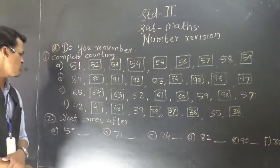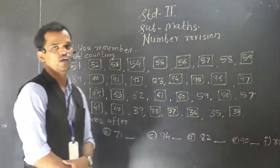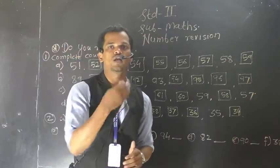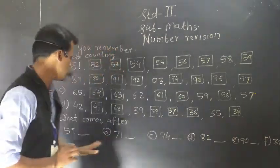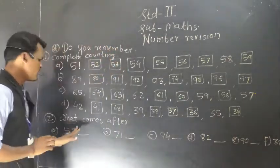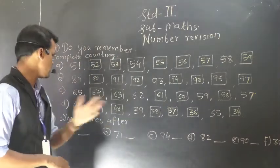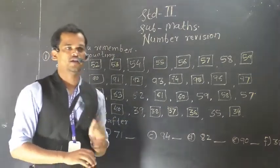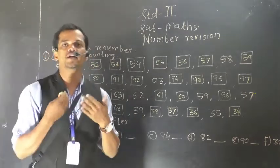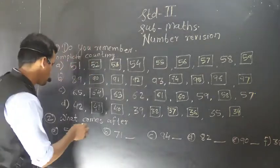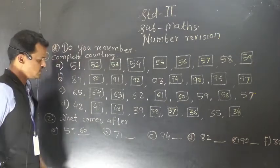Then next question: what comes after? So here we have to write the next number. So 59 is given. After 59, when we add 1 into 59, then we will get 60. So the number after 59 is 60.